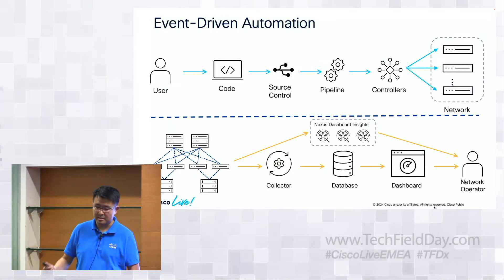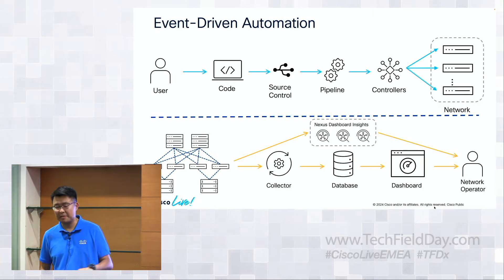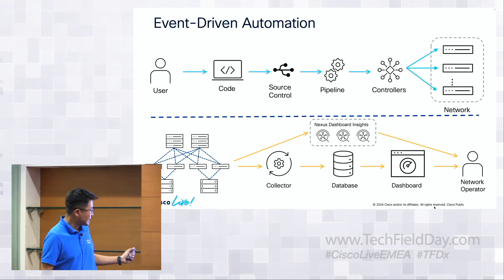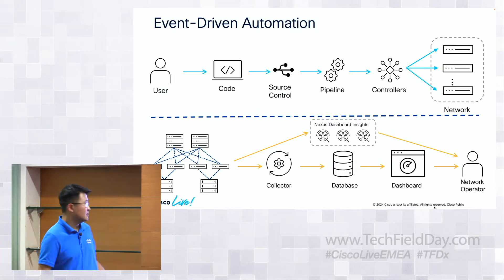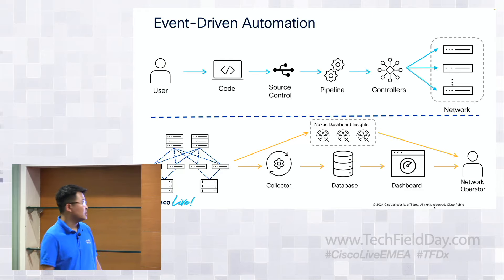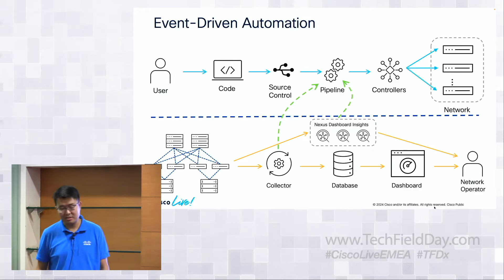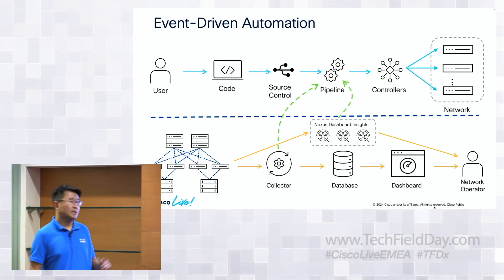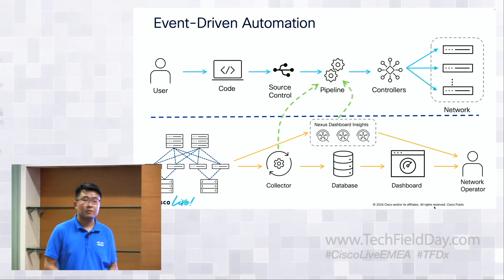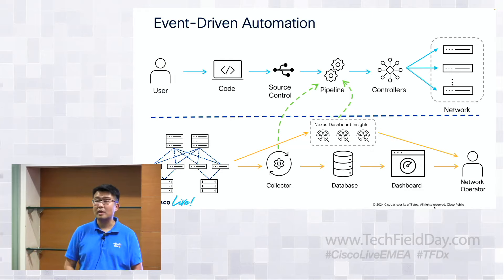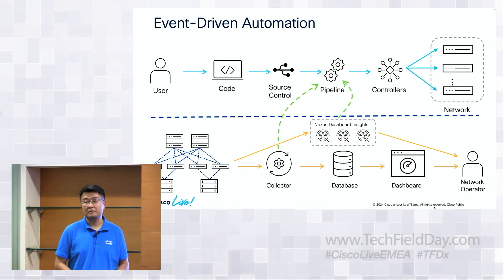Putting it all together — maybe you're using an infrastructure as code pipeline to automate your network, and you're building an open-source solution or using Nexus Dashboard Insights to monitor. But eventually, there is no cross between these two: you manage configuration separately from monitoring. Event-driven automation is trying to stitch this together, using whatever data you collect from the collector and taking that feedback to your automation pipeline to help you auto-remediate problems or do something automatically.